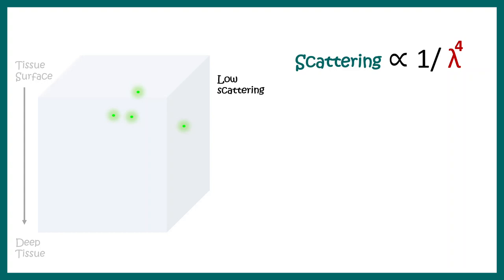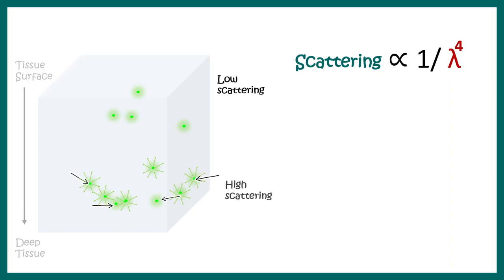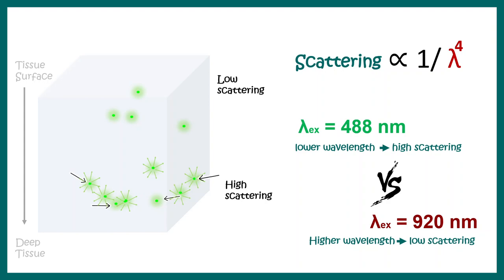Another factor is scattering. Imagine a tissue block with fluorophores at different depths. Fluorophores near the surface scatter less, but those deep inside the tissue lead to a lot of scattering. Scattering is also inversely proportional to lambda to the power of 4 — greater the wavelength, lesser the scattering. In a two photon process using 920 nanometer wavelength, we have far less scattering compared to 488 nanometers. These two factors — reduced photobleaching and reduced scattering — give two photon microscopy an added advantage over one photon processes.